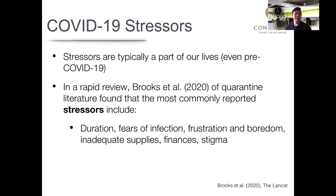What they found, narrowing down to research papers most relevant to COVID-19, is that commonly reported stressors during lockdown, social isolation, and quarantine included things very relatable to our situation today. For example, duration of lockdown or quarantine — even though in Canada the situation is improving and businesses are beginning to open, we still don't know how long COVID-19 will last, when a vaccine will be developed, or if situations will worsen and lockdowns will return.